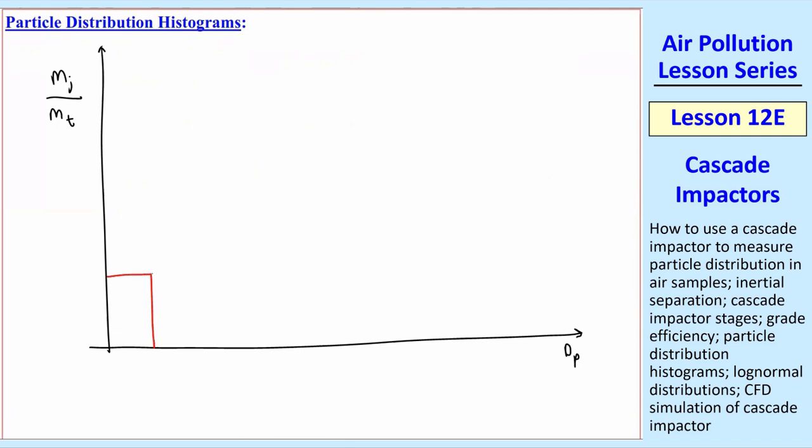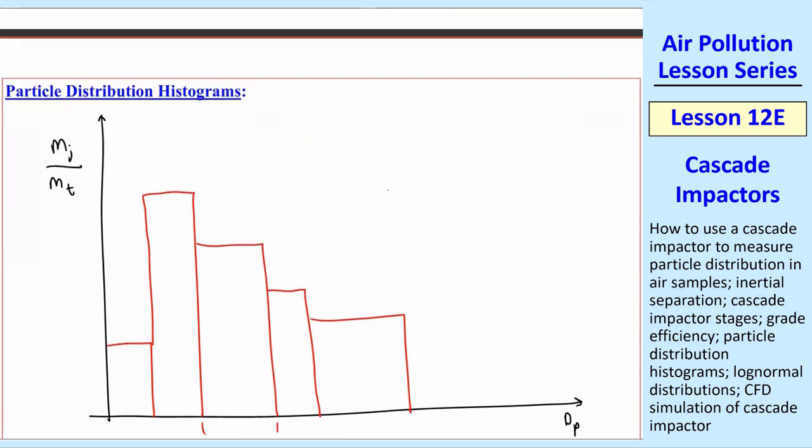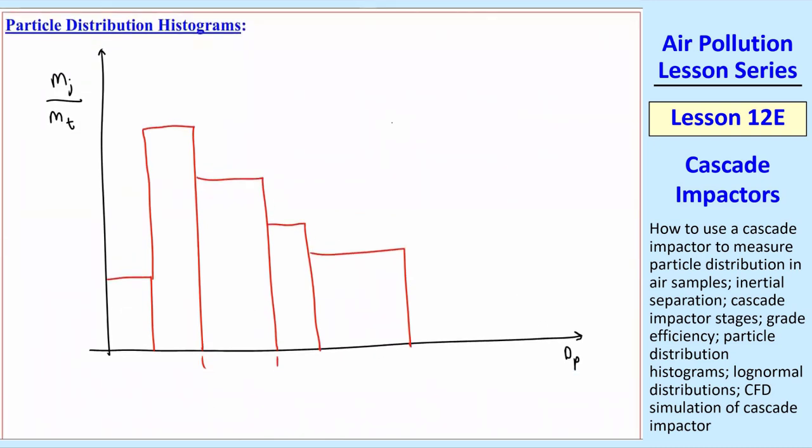And you will end up with something like this. And I'm purposely drawing these not all the same width because they aren't all the same width. You can see that from the grade efficiency curve. So some of them are fat and some of them are skinny. So let's do the case with eight stages. If we start counting at zero, this would be stage or bin zero. And then one, two, three, et cetera, up to seven. So there's eight stages.